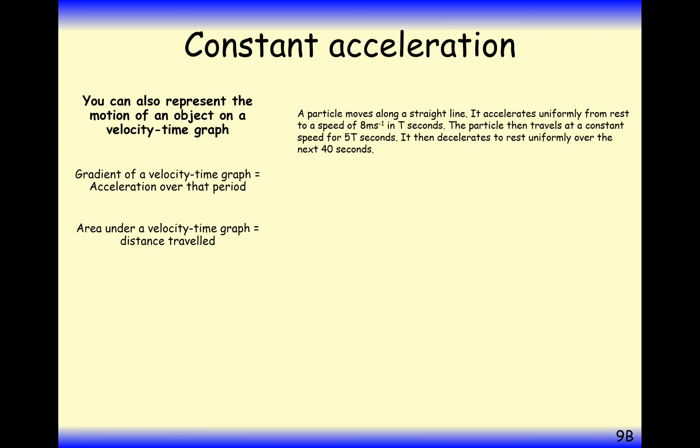The particle then travels at a constant speed for 5t seconds, so we're up to 6t seconds now. It then decelerates to rest uniformly over the next 40 seconds. Now, when it says the word uniformly here, that means that when we draw the diagram, our acceleration and deceleration are going to have straight lines. They're not going to be curved in any way.